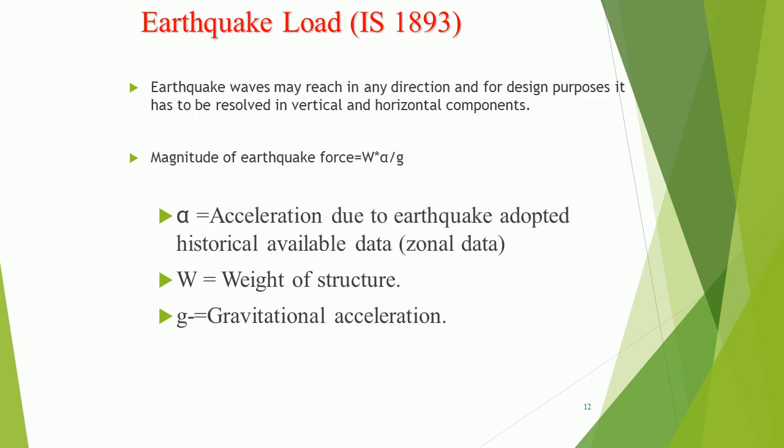Earthquake load as per IS 1893. Earthquake waves may reach in any direction, and for design purposes they must be resolved into vertical and horizontal components. The magnitude of earthquake force equals W multiplied by alpha divided by G, where alpha is the acceleration due to earthquake adopted from historical and zonal data, W is the weight of the structure, and G is gravitational acceleration.